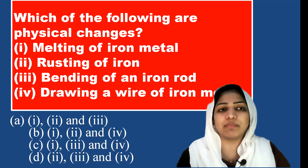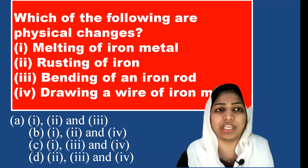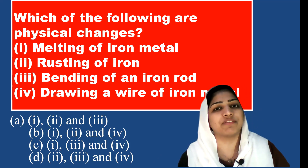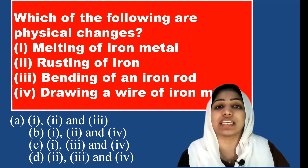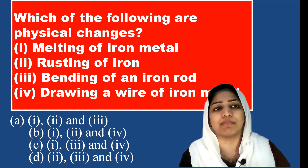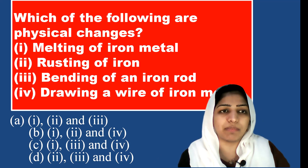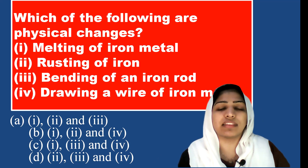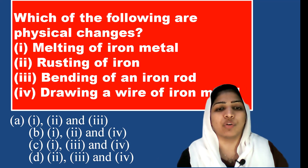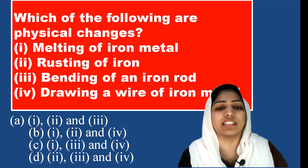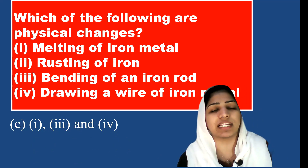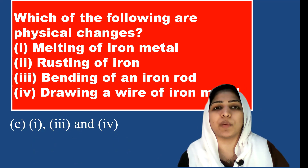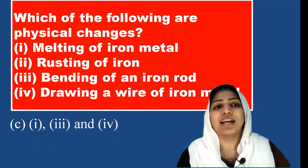The physical changes are melting of iron, bending of iron rod, and drawing wire. The correct answer is option C.